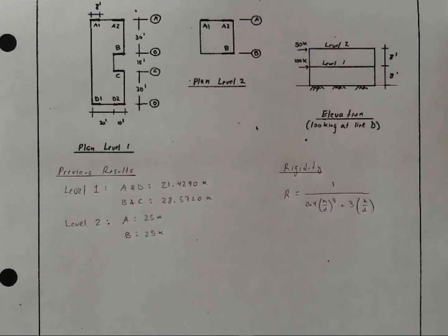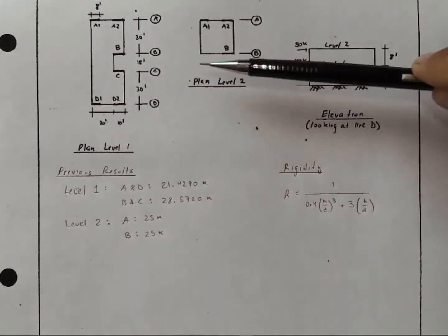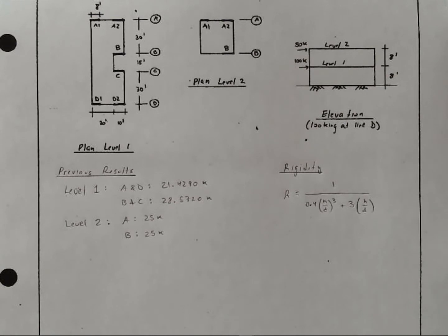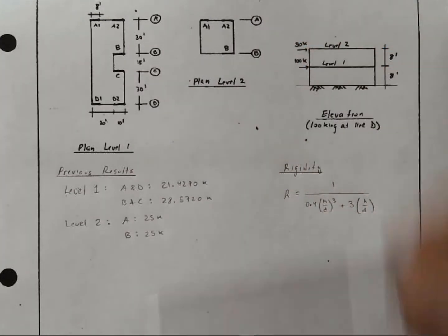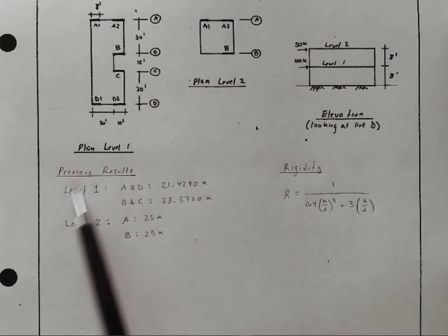Here, we have our example. You'll recall that we have a two-story building with these seismic loads given. A larger plan on level 1, a smaller plan on level 2. In the last video, we already calculated the forces along line A, B, C, and D for the two different levels. And those values are summarized right here.